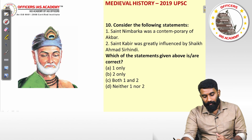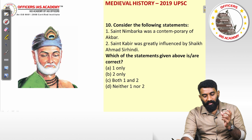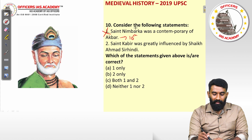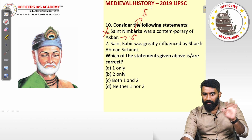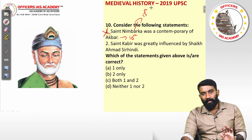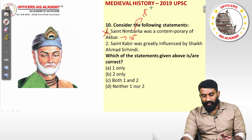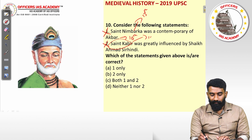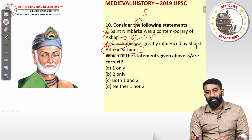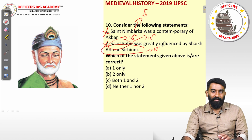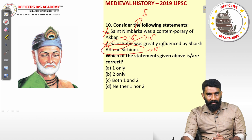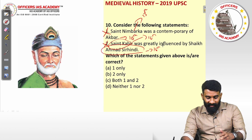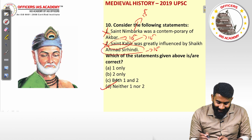Question ten: statement one says Saint Nimbarka was a contemporary of Akbar — this is incorrect, because Akbar lived in the 16th century while Nimbarka lived in the 13th century. Statement two says Saint Kabir was greatly influenced by Sheikh Ahmed Sirhindi — this is also wrong, because Kabir lived in the 14th century while Sheikh Ahmed Sirhindi lived in the 16th century, so Kabir could not have been influenced by someone who came later. Both statements are wrong. The answer is option D.